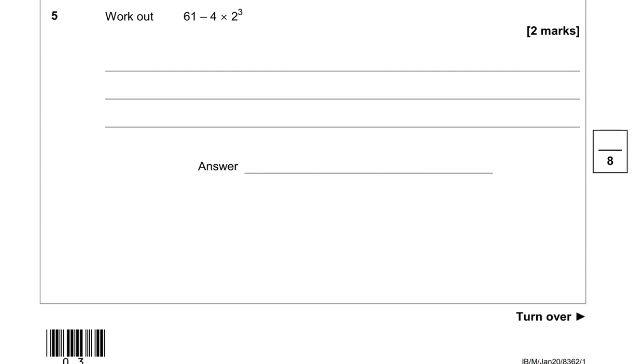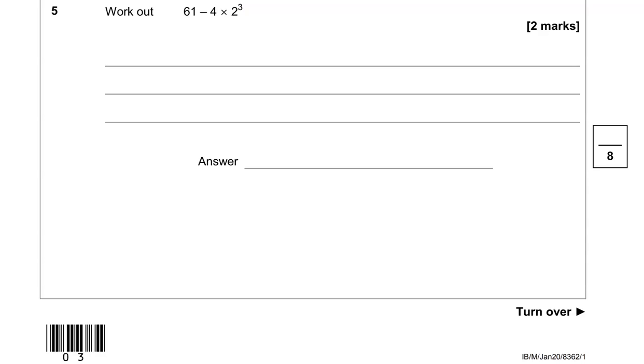Question five. Work out 61 take away 4 times 2 cubed. So we're going to have to apply BIDMAS here. Do we have any brackets? No, we don't. Do we have any indices, which is powers? Yes, we do. And that is 2 cubed. So we're going to work out that first.